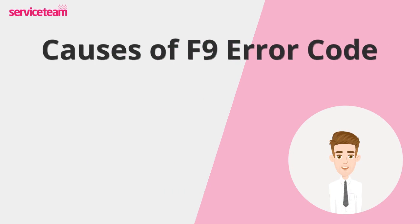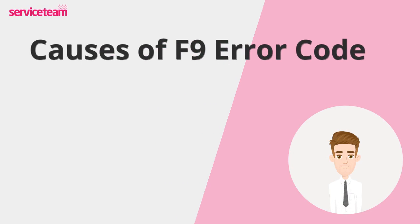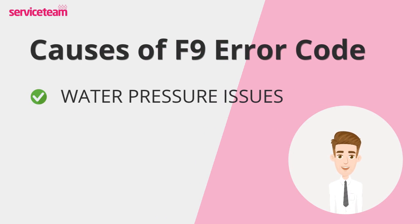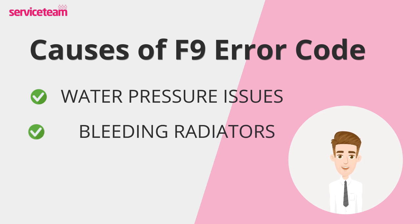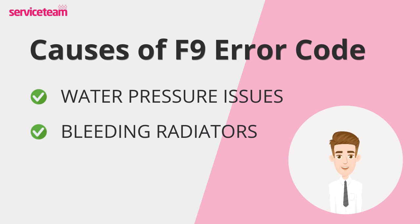Let's see what causes the F9 error. The F9 fault can be triggered by low or high water pressure. If your system's pressure falls outside the recommended range, your boiler can't operate safely. This can happen due to leaks in the system, which cause a drop in pressure, or blockages and airlocks that affect the water pressure. Bleeding your radiators can sometimes lead to pressure loss if too much water escapes.